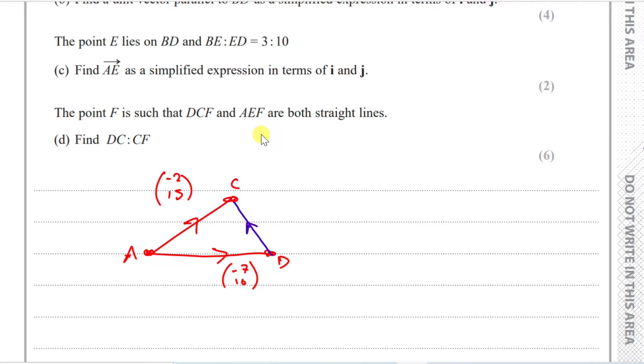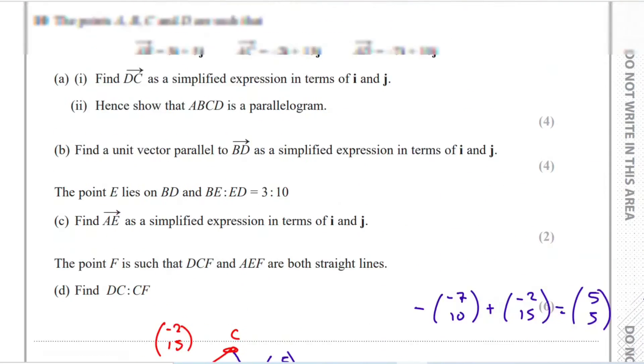This would be a vector length of minus 7 and 10. Now, they want to go from which way? D to C, so I'm going to add a different color pen. D to C. So to get from D to C, you follow the known routes. You can go back from D to A and then add A to C. So it's going to equal minus minus 7, 10 plus minus 2, 15.